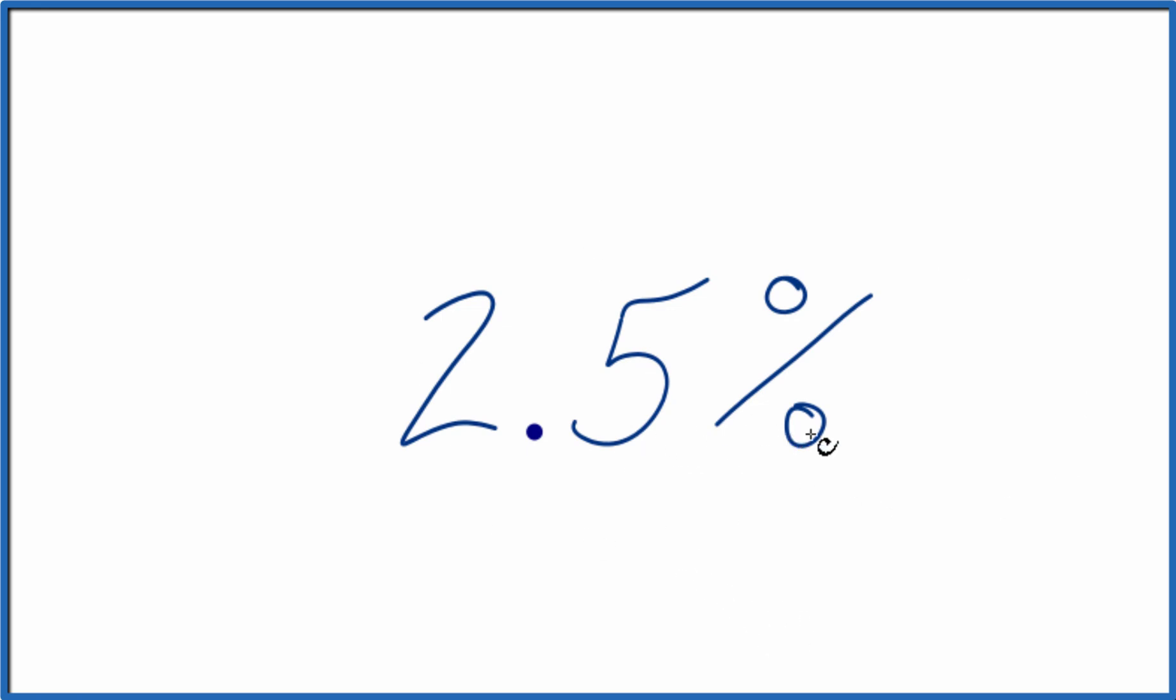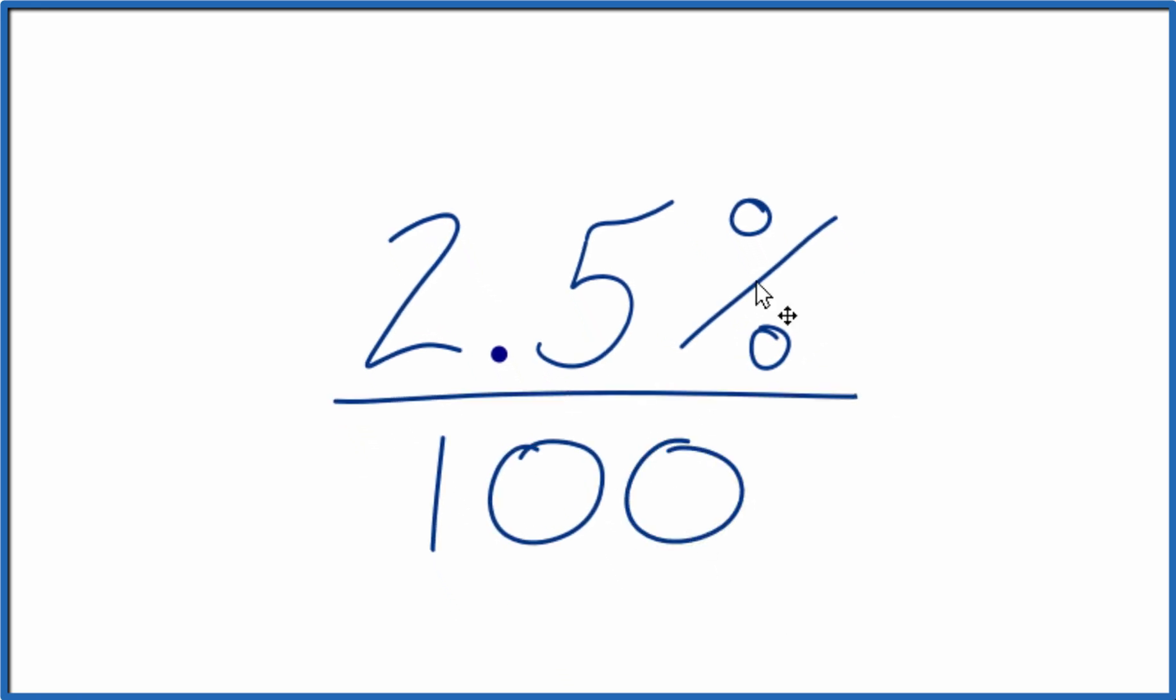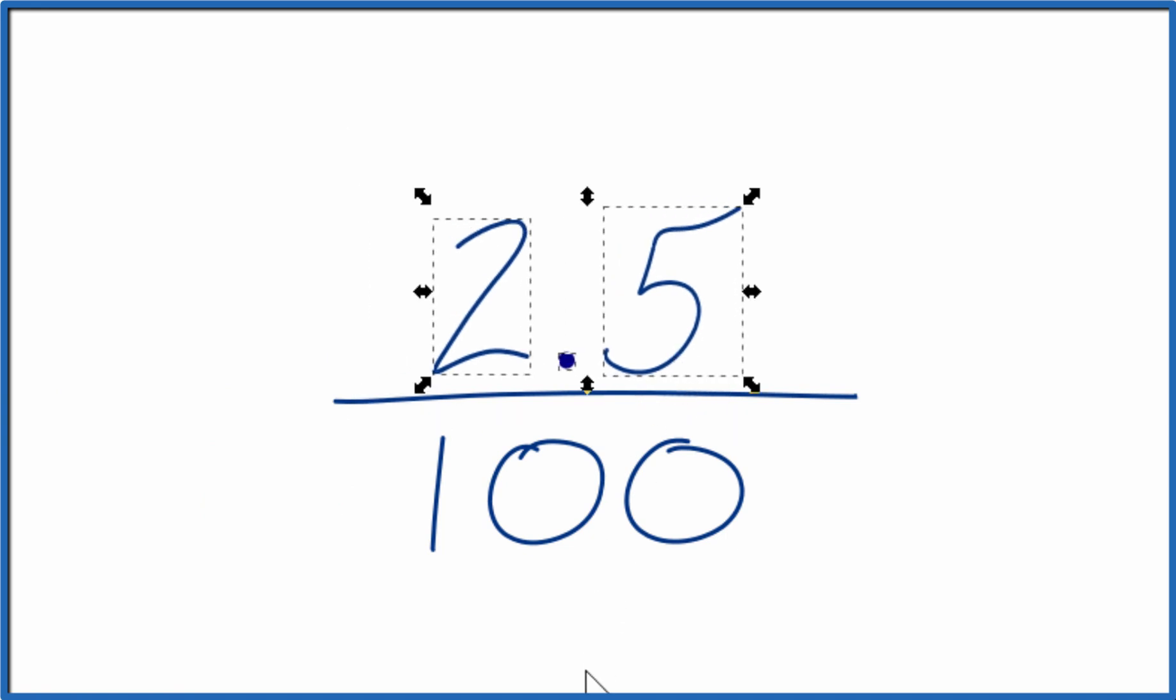So write out 2.5, and we have percent here. That means over 100, so we could just put this over 100. Then we'll get rid of the percent sign. So we have 2.5 over 100. That's our fraction.